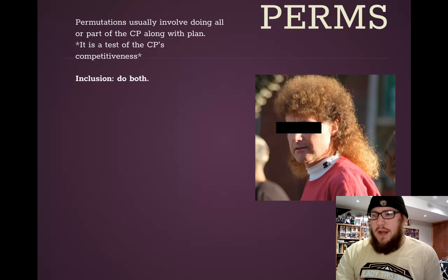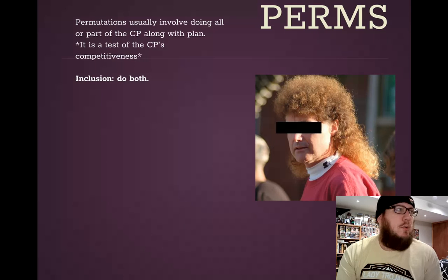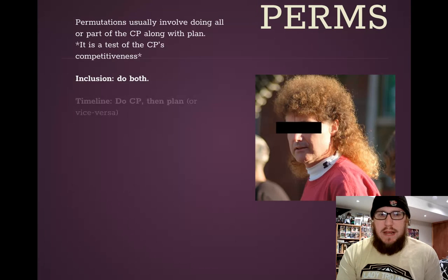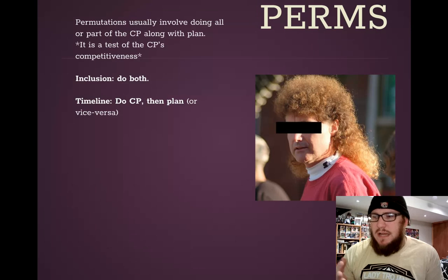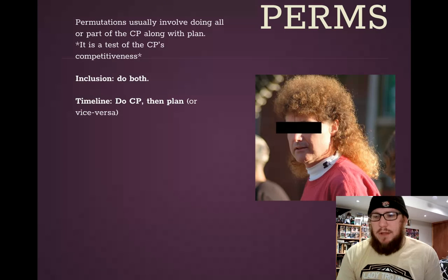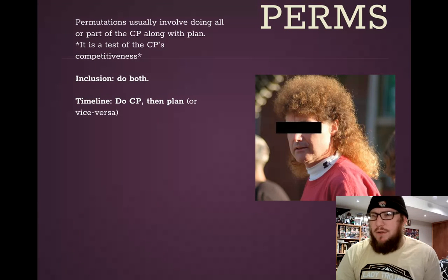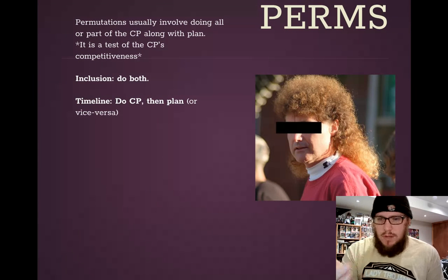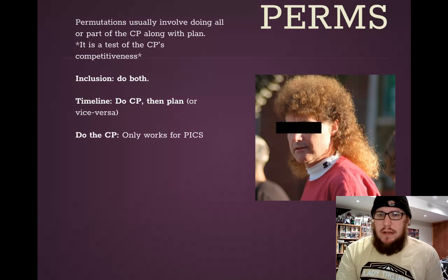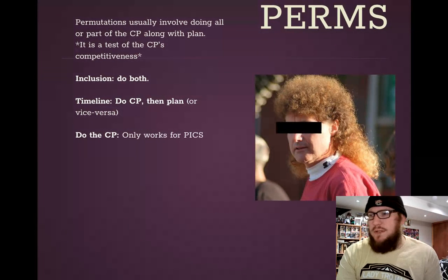So there are inclusive perms. Perm do both tends to be interpreted as doing the entirety of the plan and the entirety of the counterplan. Sometimes people make timeframe permutations — do the counterplan then the plan, or do the plan then the counterplan. Sometimes people say these are problematic, because if you said do the counterplan first, then you are not doing the entirety of the plan, because you're not doing the plan immediately. So that's a potential area for argument. Perm do the counterplan will work only for certain types of plan-inclusive counterplans, and we'll talk more about that in a different lecture.